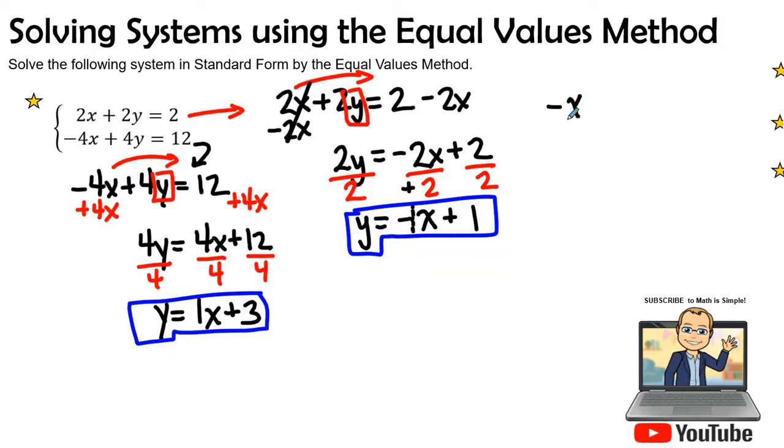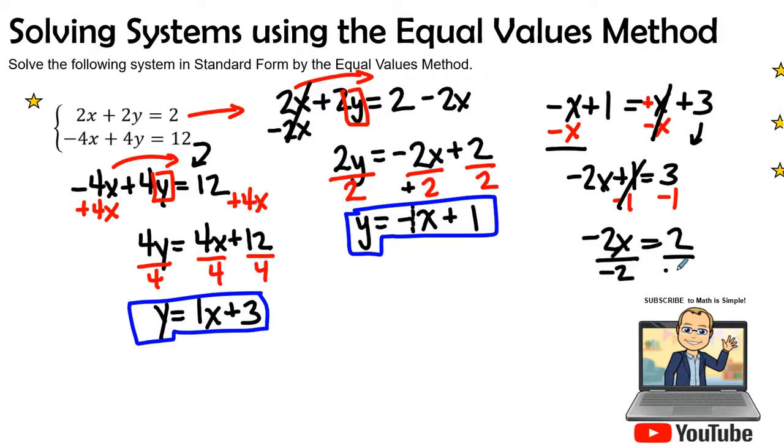So let's go ahead and get our negative x plus 1 equal to x plus 3. I'm going to add a negative x to both sides. This gives me negative 2x plus 1 equals, this drops to 0, and I'm going to bring down the 3. So add a negative 1 to both sides. So I have negative 2x equal to 2. Divide by negative 2, as always, and that gives me x equals negative 1.